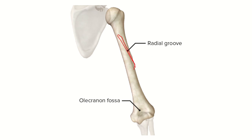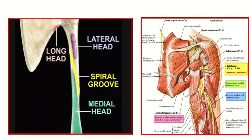We have to find the structure which lies in this groove. In the second picture we can see the upper and lower parts of the humerus, and we can see the medial head and lateral head of the triceps muscle. Between these two heads there is a groove — this is the spiral groove — and within the spiral groove there is a structure we need to identify.